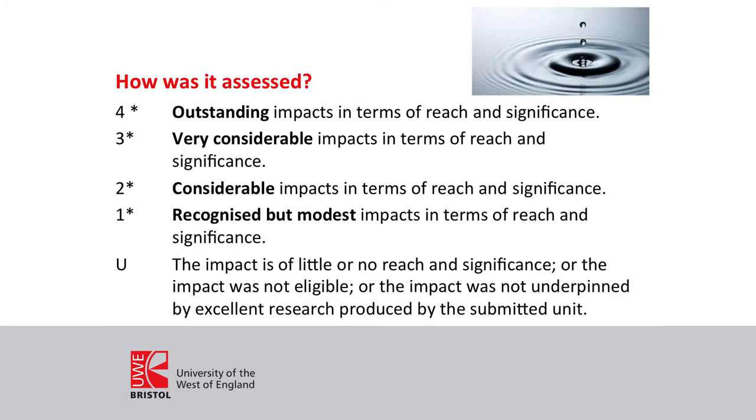The actual definitions used for the impact part of the process were on the same five-point scale: outstanding, very considerable, considerable, recognised but modest, or little/nothing. It's basically a scale where words give you an idea of where you should be, applied in an intuitive way by panels. There was a lot of anxiety in the academic community and amongst panels about what they were going to do with all this information about impact and how they were going to make a sensible, rigorous assessment.